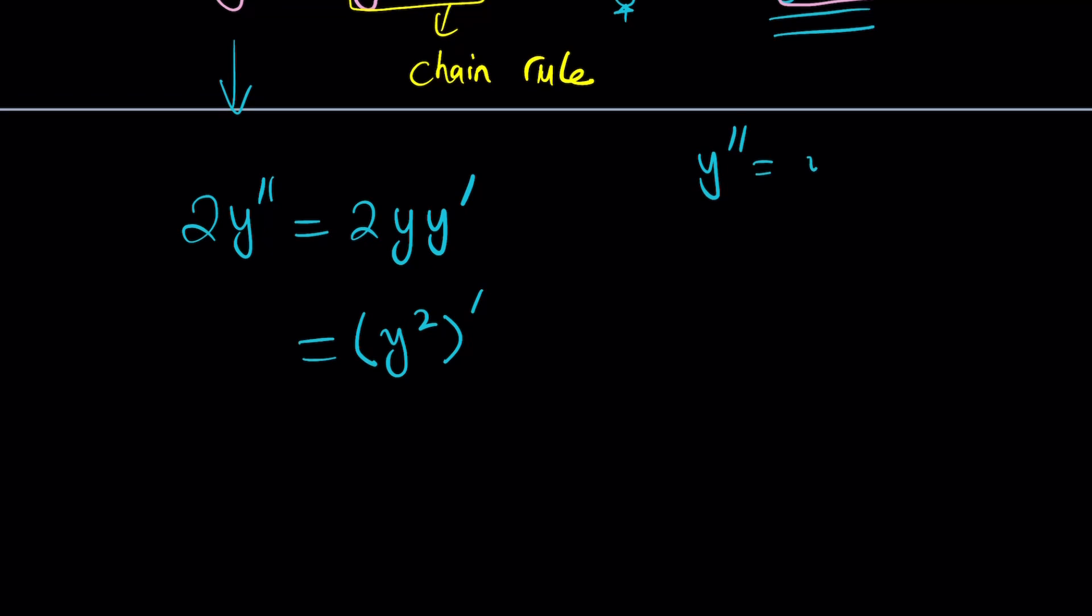So, in other words, we can kind of write it as follows. So, what about the 2? 2 is a constant. It can go in and out, so it doesn't matter. We have the constant rule, so we can kind of write it like this. So, the derivative of 2y prime is 2 times y double prime. Make sense? Okay, great.